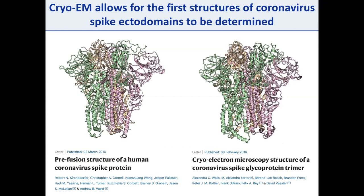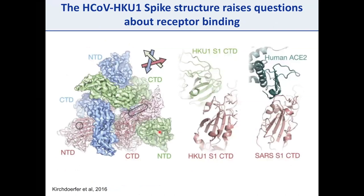In 2016, the first two full coronavirus spike protein structures were reported back-to-back in Nature. Our lab, in collaboration with Andrew Ward's lab at Scripps, solved the HKU1 spike, while David Veesler's group at the University of Washington, in collaboration with Felix Rey's lab, solved the mouse hepatitis virus spike. It was exciting to finally place disparate structural observations from past studies into the context of a full-length spike.